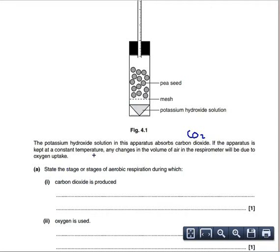If the apparatus is kept at a constant temperature, any change in volume of air in the respirometer will be due to oxygen uptake. Right, so here's the funny thing. You're not measuring the amount of oxygen taken up. What you're measuring is the amount of CO2 produced.